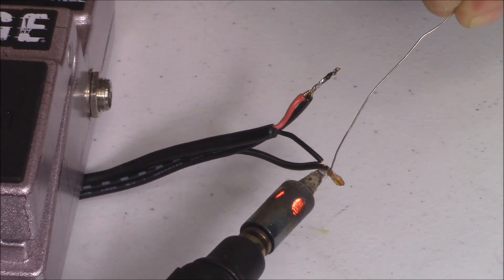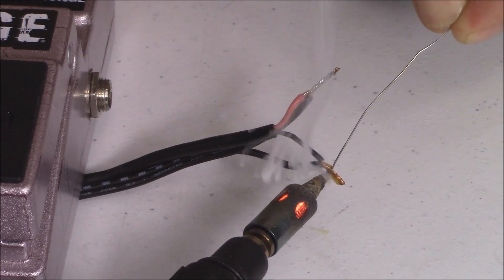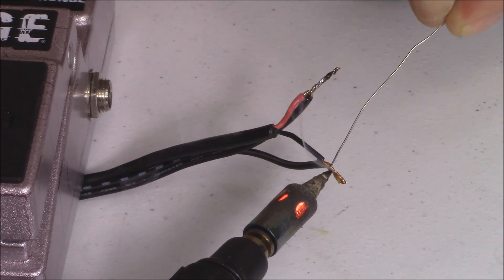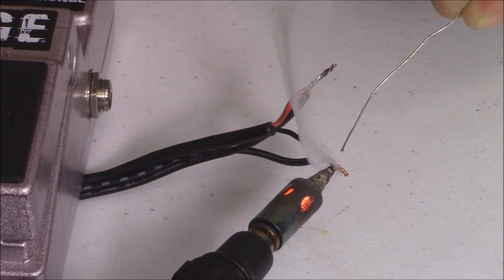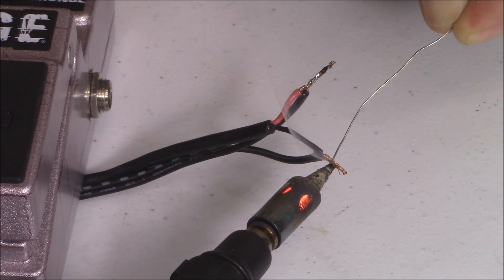I'm using a butane soldering iron. Get it on Amazon. So let's just let it heat up. And then the solder should soak right in.